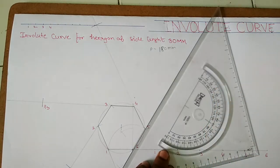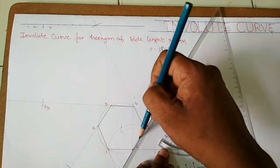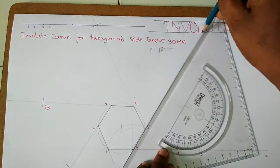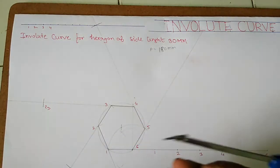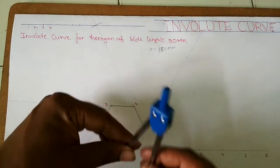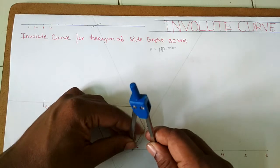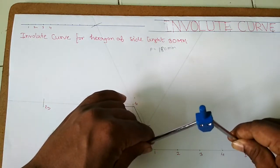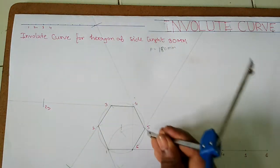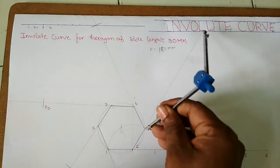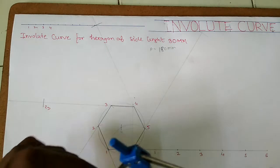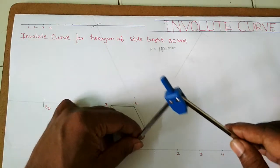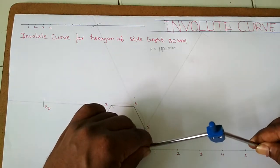You have to select your drawing space carefully, otherwise your curve will go off the space. The next point will be point 6.